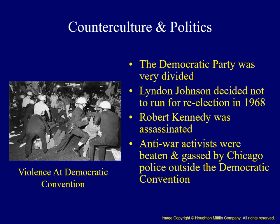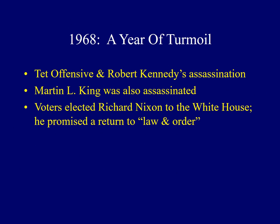The counterculture movement and the Vietnam War further divided the Democratic Party. Lyndon Johnson decided not to run for re-election in the spring of 1968. Robert Kennedy, John Kennedy's younger brother, was killed by an assassin's bullet following the California primary in June of 1968. Anti-war activists who staged protests outside the Democratic Convention in Chicago were beaten and gassed by police. In April 1968, Martin Luther King Jr. was also assassinated, followed by rioting in over a hundred cities. It seemed as if the United States was being ripped apart from the inside. Voters became more conservative, and Richard Nixon was elected to the White House on a promise of law and order.